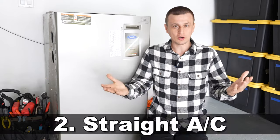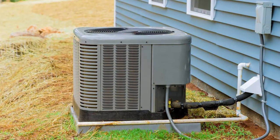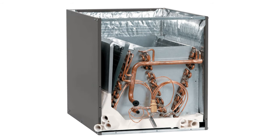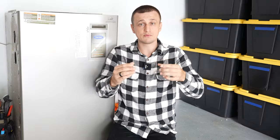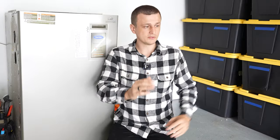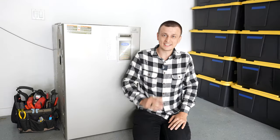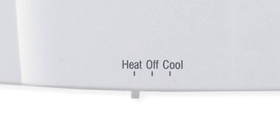Number two is a straight air conditioner, also known as a split system. The reason they call it a split system is because you have a unit outside called the condenser unit, and you have another unit inside called the evaporator coil. These two split-up units are connected together by copper pipes that have refrigerant in them. With the help of this refrigerant, heat is absorbed from inside the house and brought outside and rejected into the air.